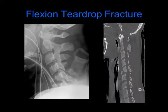A flexion teardrop fracture is a serious type of injury which occurs with flexion and compression. This is highly unstable. It is associated with severe spinal cord injury, most often the anterior cord syndrome. It is a compression fracture of the anteroinferior vertebral body, and you also see other signs of hyperflexion injury. Here's an example showing a kyphotic deformity on the left radiograph, as well as a compression fracture of the anteroinferior aspect of the C5 vertebral body.